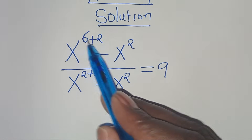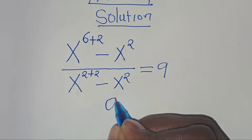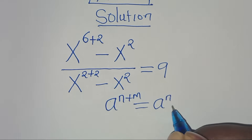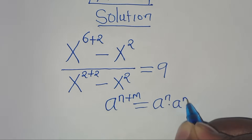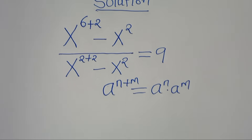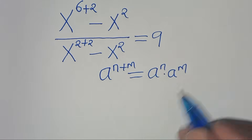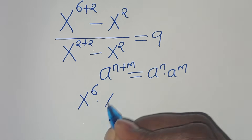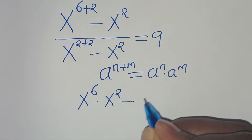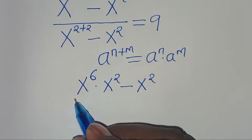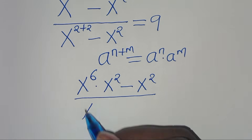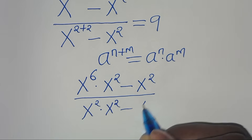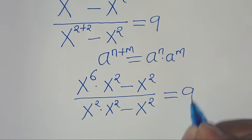So x to the power of 6 plus 2 is in the form of a to the power of n plus m, which we can express as a to the power of n times a to the power of m. Applying this exponent property, we have x to the power of 6 multiplied by x to the power of 2, subtract x to the power of 2, divided by x to the power of 2 times x to the power of 2, subtract x to the power of 2, equals 9.